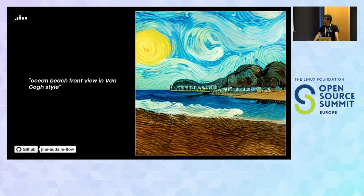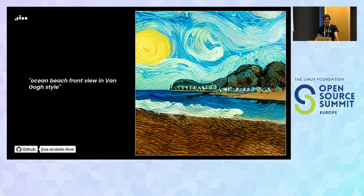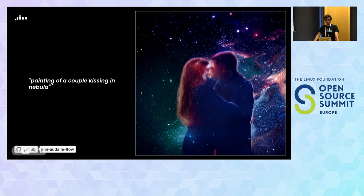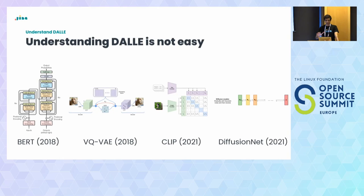Here is an example of generative art. The query is 'ocean beach front view in a Van Gogh style' — and this image is generated by the AI. It's not retrieving a Google image; it's purely generated based on the prompt. Another example: 'painting of a couple kissing a nebula' — you can see the results. Understanding these DALL-E and generative art models is complex for several reasons.